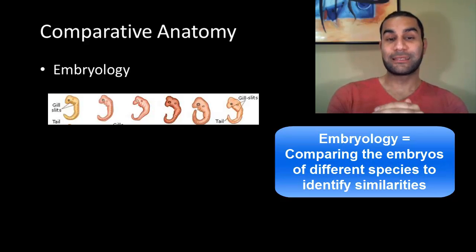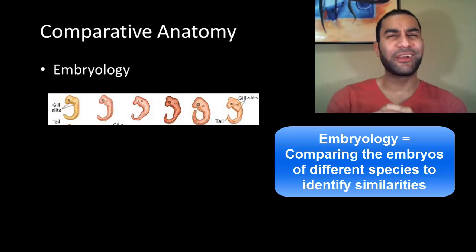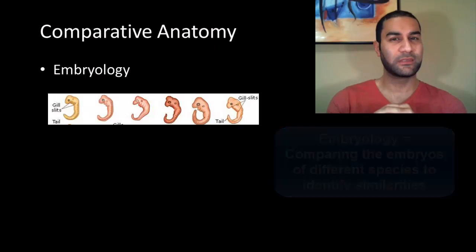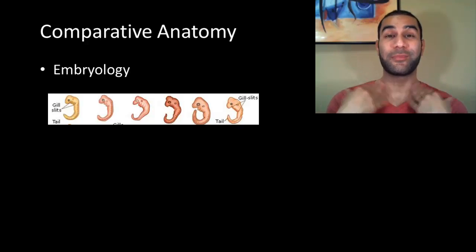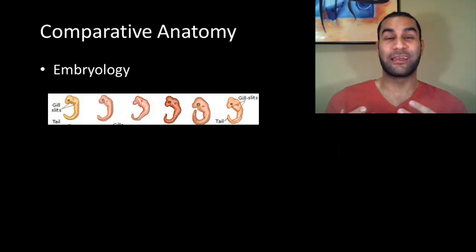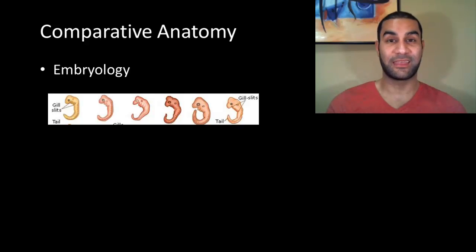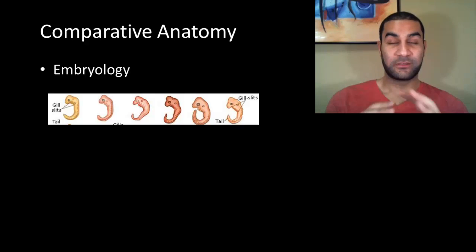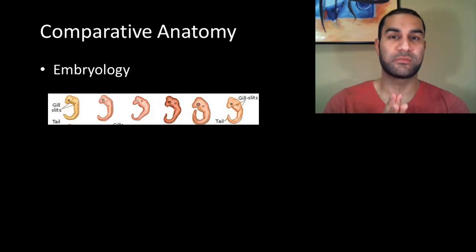Even though at the infancy level organisms of different species are physically significantly different from each other, at the embryologic level it's very possible that they're very, very similar — and in fact, they are. These six embryos are of six different species of organisms, and although they're drastically different at their infancy level, here at the embryologic level it's very hard to tell them apart. Can you tell which of these six is the human? It's hard to tell, because they all have a tail and they all have gills. All of us had gills at the embryonic stage — however, after the embryologic phase, the gills are eliminated and we develop lungs.